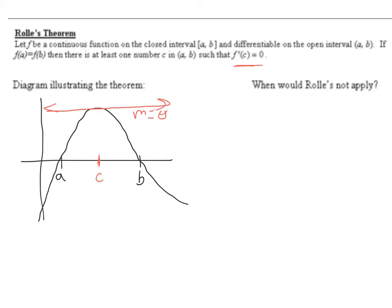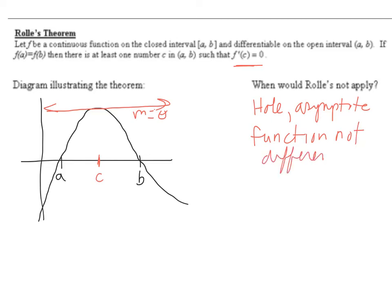So let's think about when Rolle's would not apply. Well, if there was a hole in the interval, or an asymptote, or in some way the function was not differentiable — not differentiable would be like a cusp or a corner. So if in any way it's not continuous, if you apply Rolle's and you get an answer that does not exist, then it means Rolle's doesn't apply, because most likely it is not differentiable or continuous.